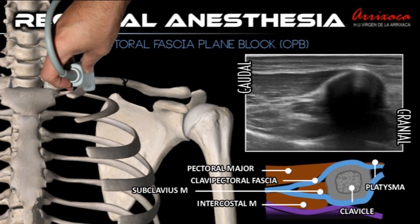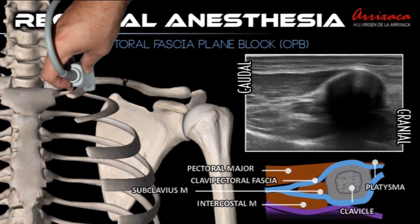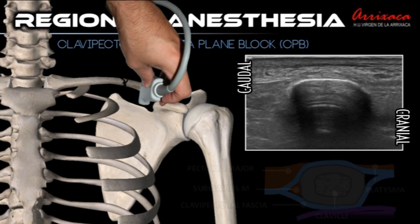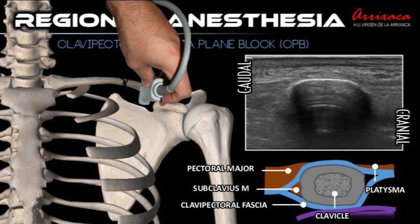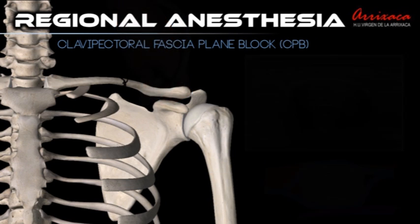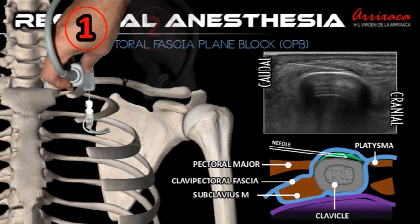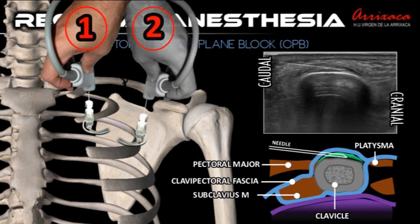The ultrasonographic probe is placed on the anterosuperior border of the clavicle on the medial and lateral side of the fracture. The position of the probe will avoid injecting over the insertion of the pectoralis major, as this would affect the diffusion of the local anesthetic.